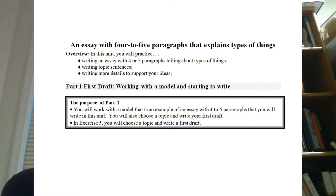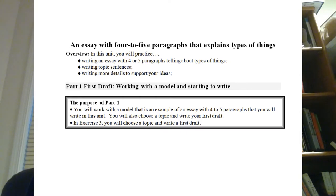We're going to be writing an essay of four to five paragraphs that explain types of things. You're going to practice writing an essay telling about types of things, developing how to write topic sentences, and writing more details to support your ideas. The first part of the unit will be leading students to write their first draft. They're going to work with a model — not just read an essay, but work with a model that is an example of the four to five paragraph type essay that they'll be writing. Then they'll choose a topic and write their first draft.